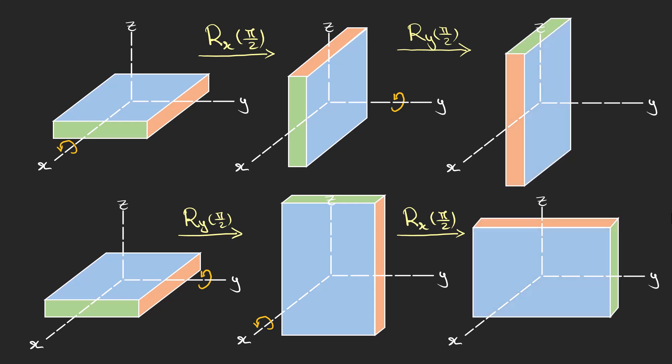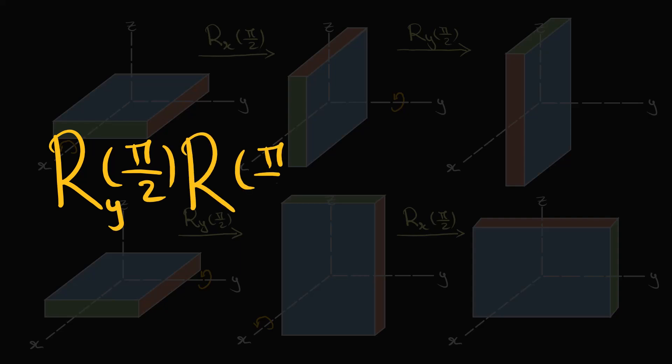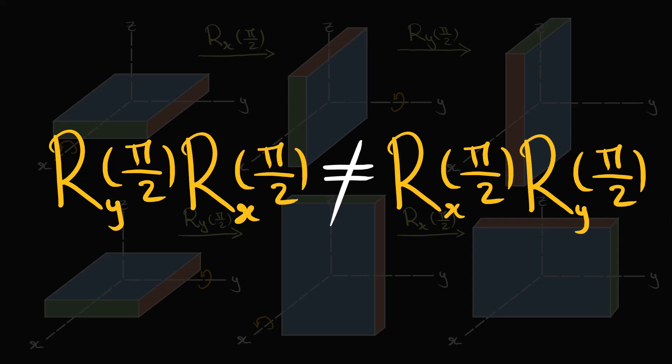You can see that the result is not the same. It shows that in this kind of rotation in three-dimensional space, the order of rotation is very important. In other words, these kinds of rotation operators do not commute.